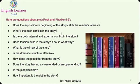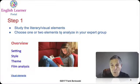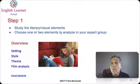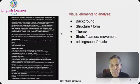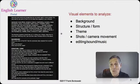Other important literary elements students study that can be applied to a film include setting, style, theme, and film analysis. In the expert group, students choose one or two of these elements to analyze under the direction of the team captain. Since we're talking about film, students can also analyze structure, form, theme, camera shots, movement, editing, sound, and music — and there may be other elements students can analyze in a film as well.